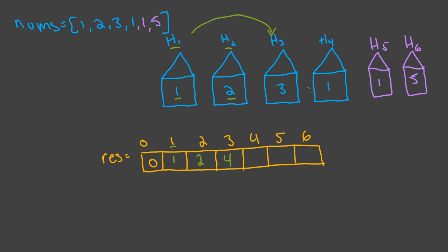For house 4, the max could be 1+1=2 or 2+1=3, but we store 4, because when we get to house 6 we don't want to recalculate — we need only the two previous values. For house 5, going from houses 1, 3, and 1 gives 5, which beats starting at house 2 going to house 5 (which gives 3), so the max is 5. For house 6, we can't rob house 5 and then house 6, so we look at houses 3 and 4: max is 4, and 4 + 5 = 9.